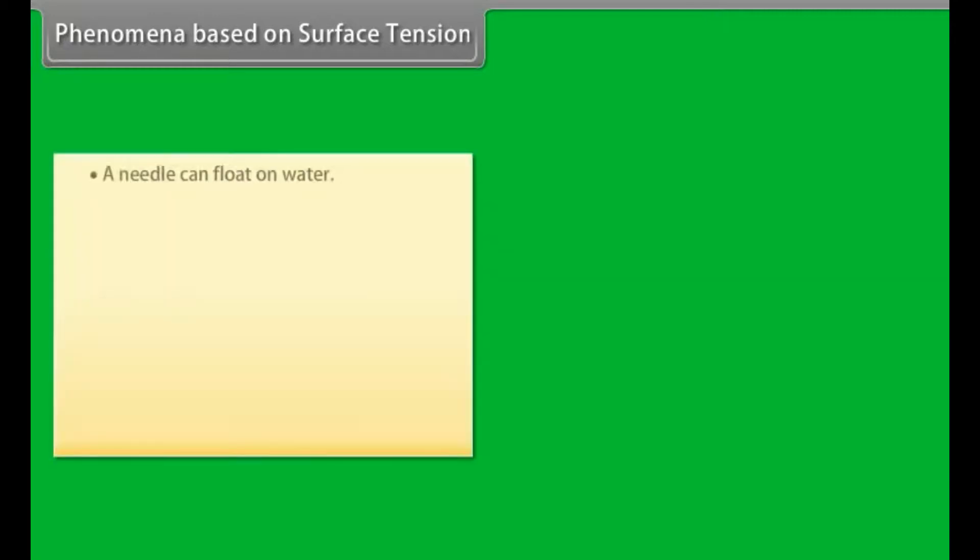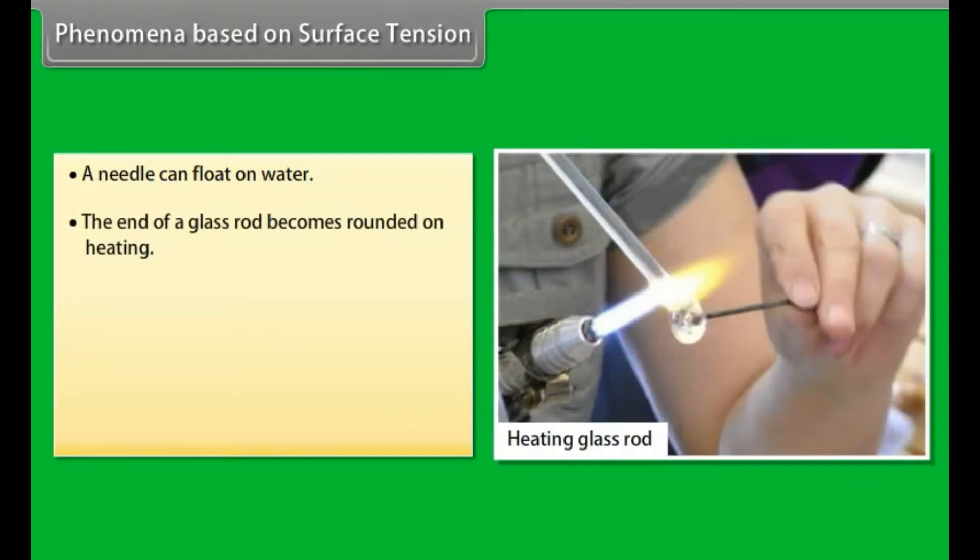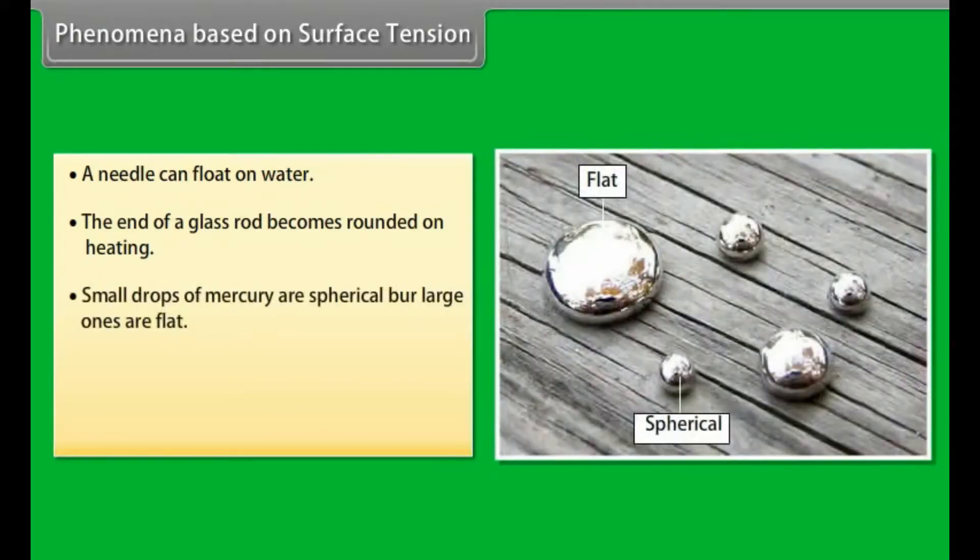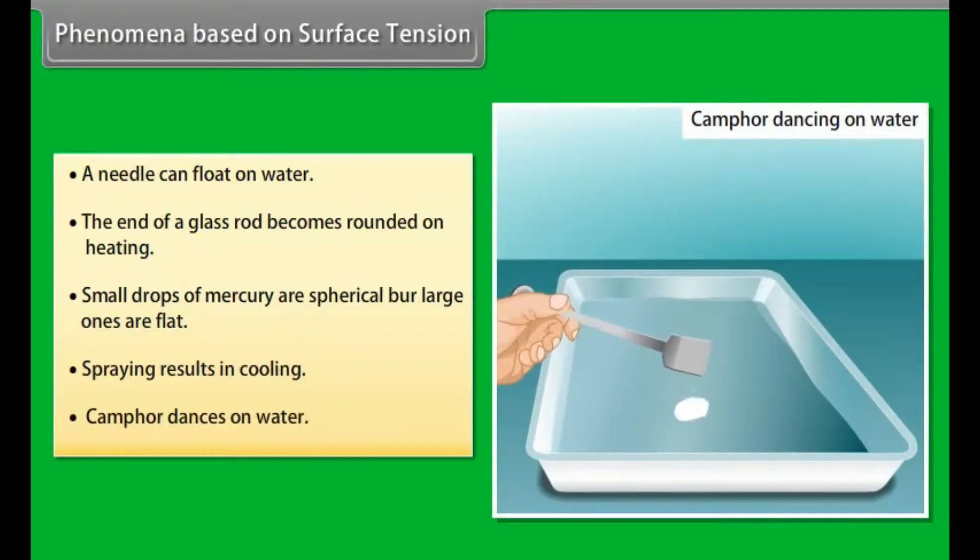Phenomena based on surface tension. A needle can float on water. The end of a glass rod becomes rounded on heating. Small drops of mercury are spherical but large ones are flat. Spring results in cooling. Camphor dances on water.